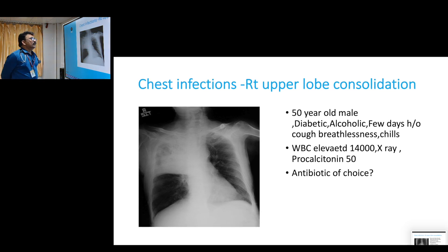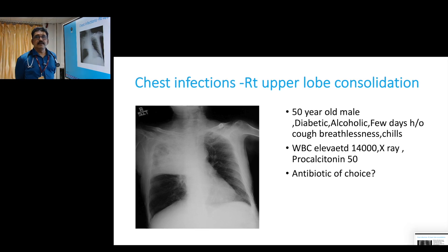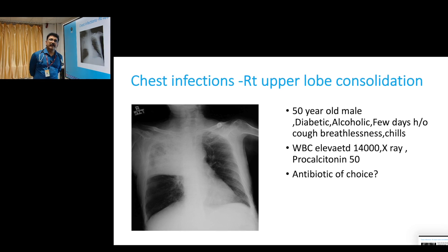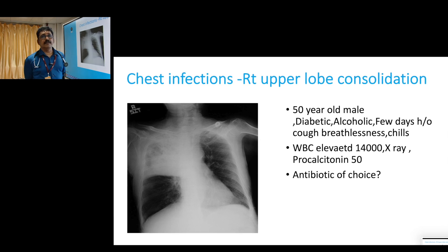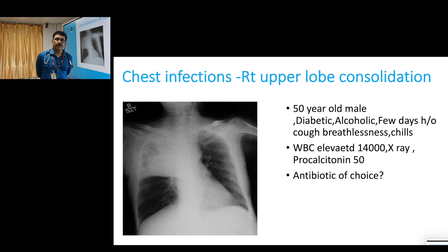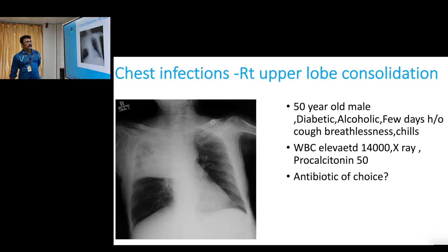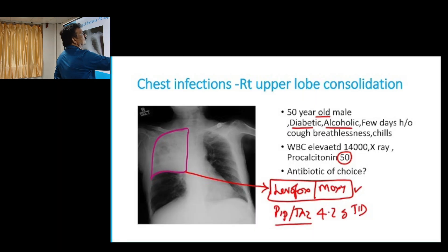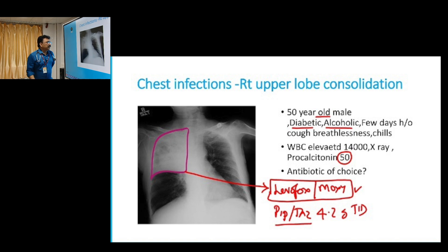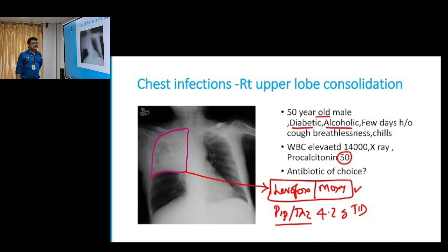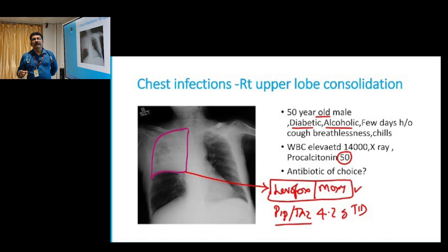Another case: 50-year-old male, diabetic, alcoholic, few days history of cough, breathlessness, and chills. WBC count is very high and procalcitonin is significantly high, meaning the patient is developing systemic inflammation and likely going into sepsis. What is the antibiotic of choice? Here, remember: older age, diabetic, immunocompromised, alcoholic. Diabetic-alcoholic upper lobe consolidation raises strong suspicion for Klebsiella pneumoniae. His counts and procalcitonin are very high — he is sick. Klebsiella pneumoniae has a predilection for the upper lobe.